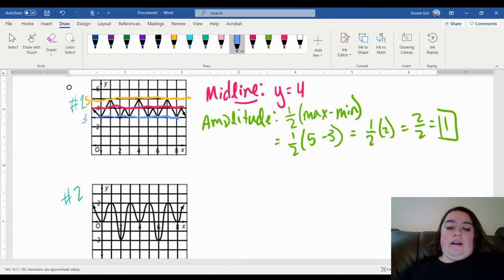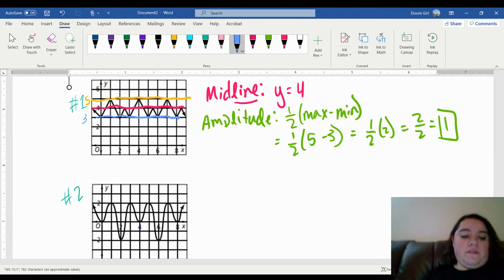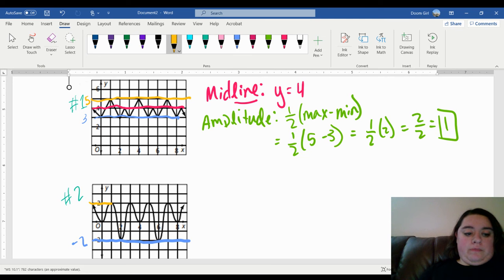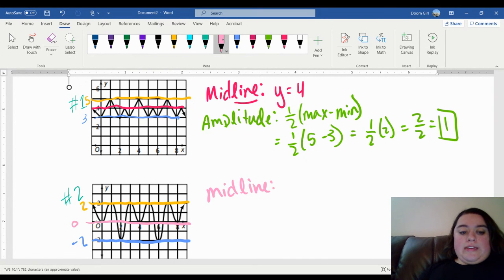So let's try this again with graph number two. Okay, so on graph number two, here's where my minimum is, and that's at negative two. My maximum is at positive two. So the exact halfway point between two and negative two is, well, zero. Or the light pink is. So my midline for graph number two is going to be y equals zero.